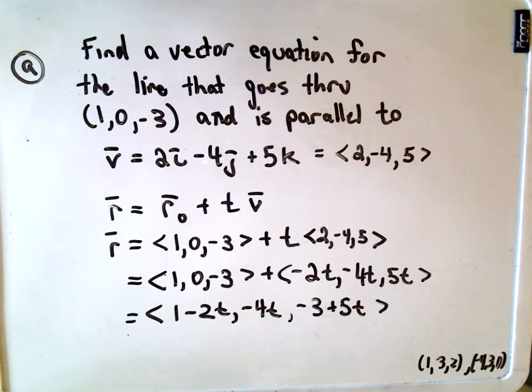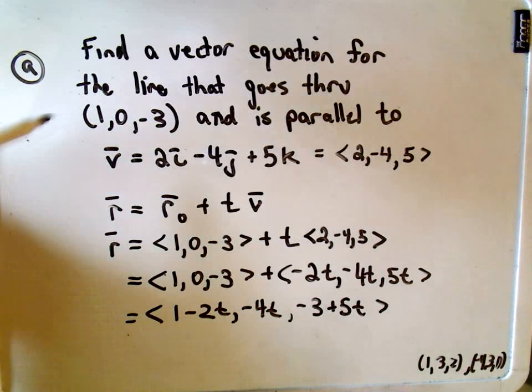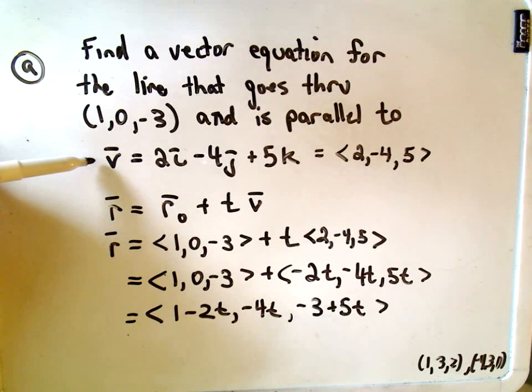So this is a vector equation that represents the line that goes through the point (1, 0, -3) and is parallel to the specified vector.